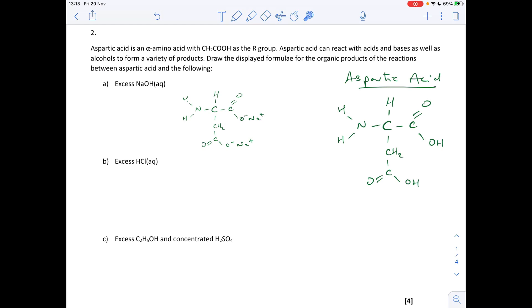Next one, excess hydrochloric acid. What part of the molecule can react with hydrochloric acid? It's the amine part. So the nitrogen, the lone pair on the nitrogen is going to accept that H+. So it'll become an NH3 plus group. And then the Cl- will just be tagged alongside.